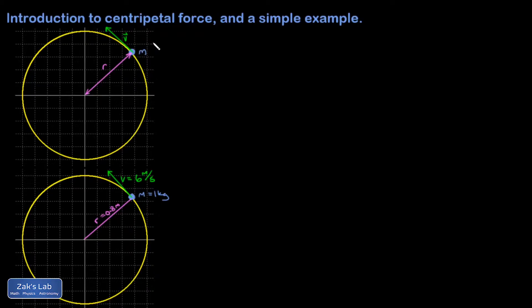So what we've discovered is that the acceleration, in order for something to move on a circular path with a constant speed, the acceleration must always be pointing exactly to the center of curvature.